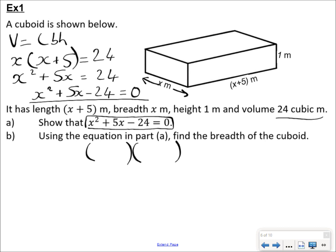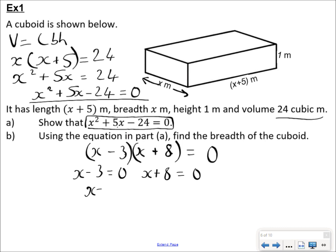If we factorize the equation, factors of 24 that can be used to make 5: 1 and 24, 2 and 12, 3 and 8, 4 and 6. So 3 and 8 are my choice. I want positive 5x, so the 8x has to be positive and the 3x has to be negative. I've got a product equal to 0, so I split it and make each part equal to 0. I get x = 3 and x = −8.